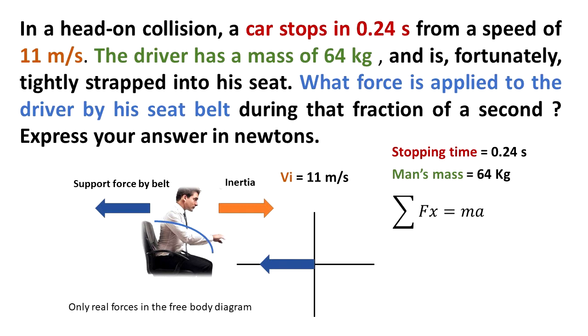The summation of the forces in the x direction is equal to the mass of the man times the acceleration. Ma represents the inertia. The support force is negative because it's going to the left from this reference frame. Minus Fs is equal to Ma.